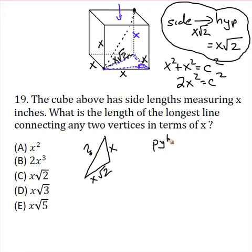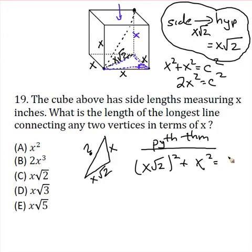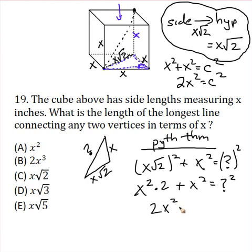Well, now we can just do Pythagorean theorem, right? I'll just write Pythag theorem. That's all we're doing here. And we'll set that up. x radical 2 squared plus x squared equals that side squared. Remember, when you square this, you've got to square each piece. So that's x squared. Radical 2 squared is just 2 plus x squared equals something squared. x squared times 2 is just 2x squared plus x squared. And let me just combine this here. We've got 3x squared equals something squared.